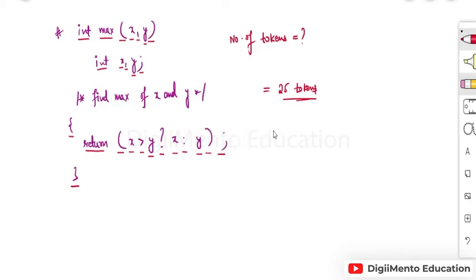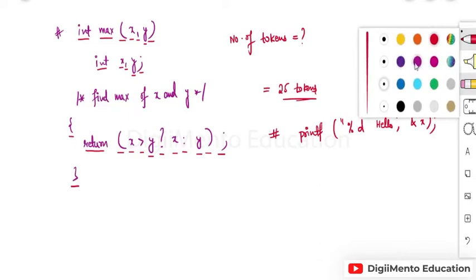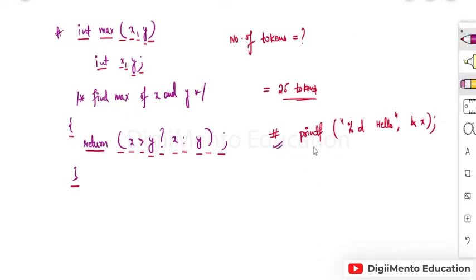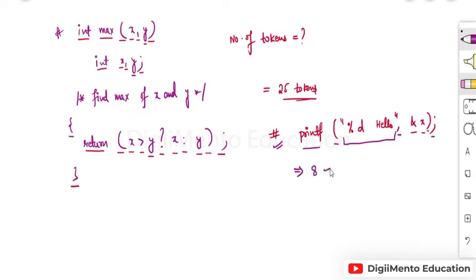Now let's consider one more example. Suppose there is a printf statement given: printf with a format string like '%d hello' and then x. We have to find the number of tokens. printf is one, open parenthesis is two, the entire string is considered as one token, then comma, ampersand, x, close parenthesis, and semicolon — so total eight tokens.